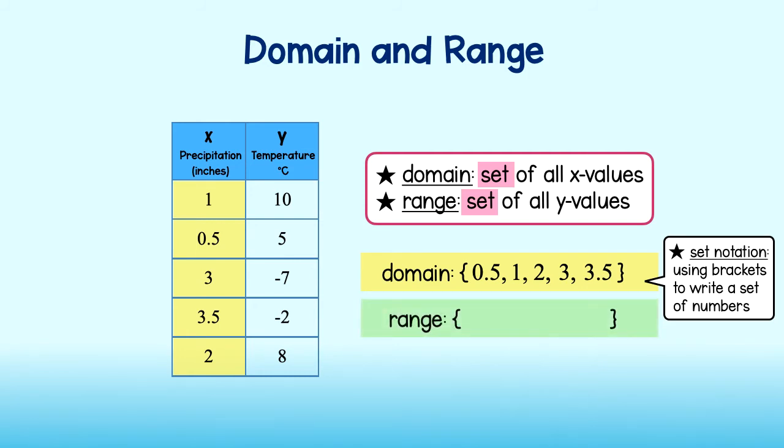The range or set of y values is 10, 5, negative 7, negative 2 and 8. We can then write them in order using set notation. There, this is the range of Janice's data.